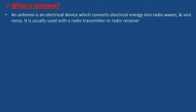What is an antenna? An antenna is an electrical device which converts electrical energy into radio waves and vice versa. It is usually used with a radio transmitter or radio receiver.